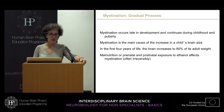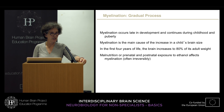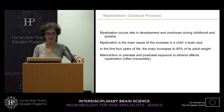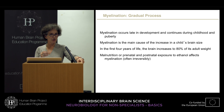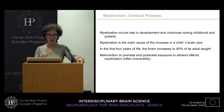Myelination is the main cause of the increase in a child's brain size, apart from proliferation of the astrocytes, which are another type of glial cells. In the human brain, in the first four years of life, the brain increases to 80% of its adult weight, and this is due to myelination of specific fiber tracts.